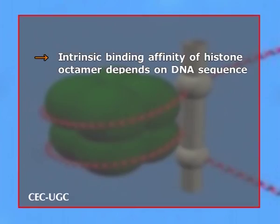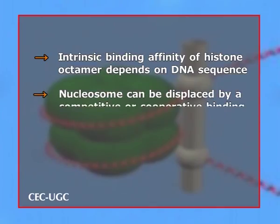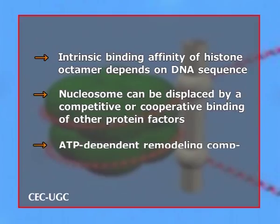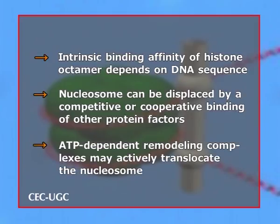Depending on the context, nucleosomes can inhibit or facilitate transcription factor binding. Nucleosome positions are controlled by three major contributions. First, the intrinsic binding affinity of the histone octamer depends on the DNA sequence. Second, the nucleosome can be displaced by competitive or cooperative binding of other protein factors. Third, ATP-dependent remodeling complexes may actively translocate the nucleosome.